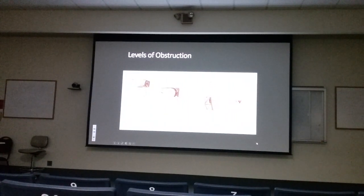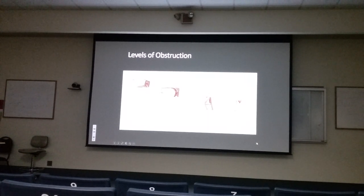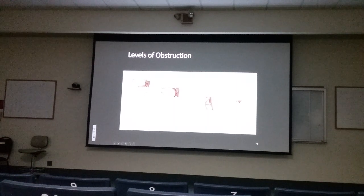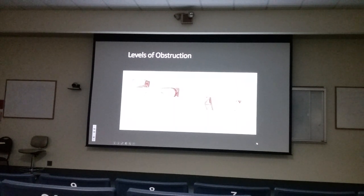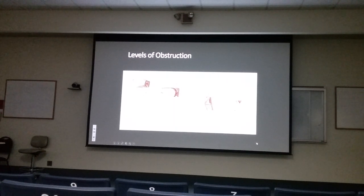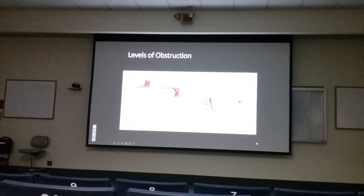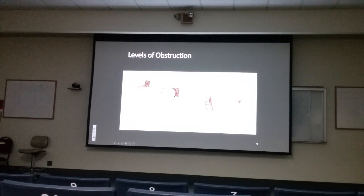The obstruction can happen in the nose — the nasopharynx — or in the oropharynx where the tongue can fall back or the soft palate can collapse. Any obstruction anywhere, from the nose to the turbinates, the soft palate, the hard palate, the mandible, the tongue, or the hyoid bone position — all those factors contribute.